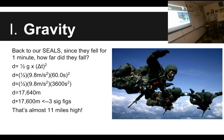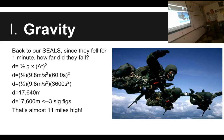Back to our SEALs: since they fell for one minute, how far did they fall? Excluding wind resistance: distance equals ½ × 9.8 m/s² × (60 s)² = ½ × 9.8 × 3,600 = 17,640 meters. Rounded to three significant digits: 17,600 meters — approximately 11 miles. They were very, very high when they jumped. Wind resistance rounds that number down a bit, but it's still a long jump.